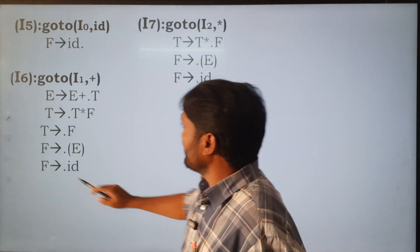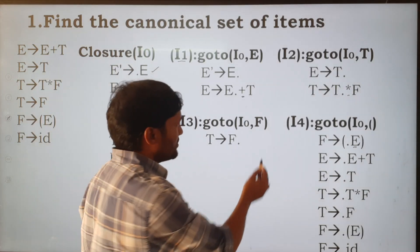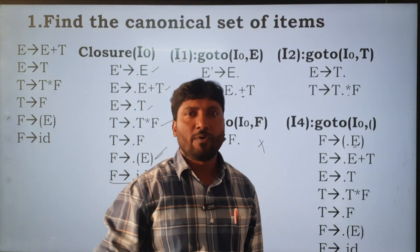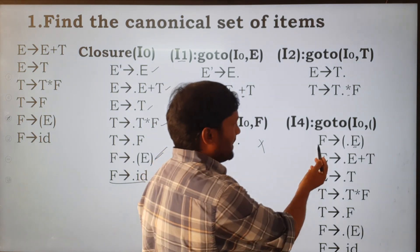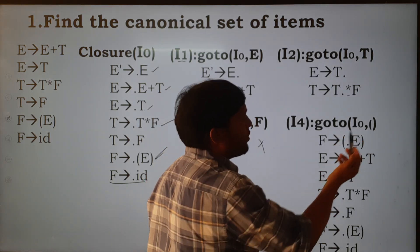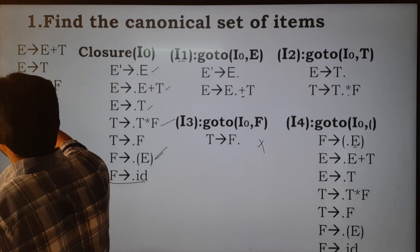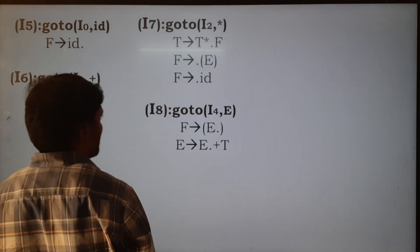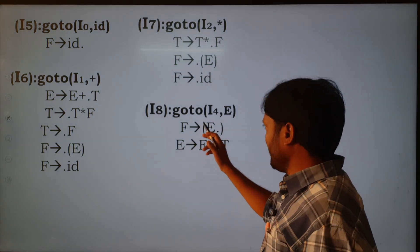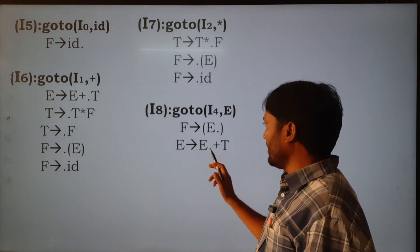I2 is over. Come to I3 — is there any symbol after the dot? No. Come to I4 — there is capital E after the dot. We apply the goto function for capital E. Applying goto(I4, E): F → (E.) close bracket, and similarly E → E.+T. This is how we get goto(I4, E).